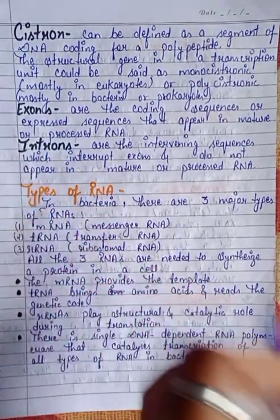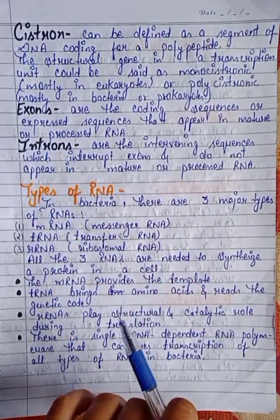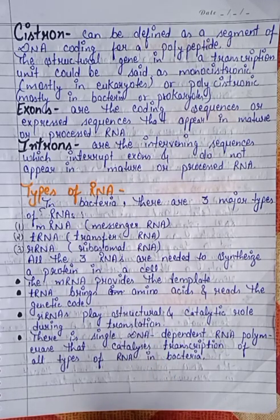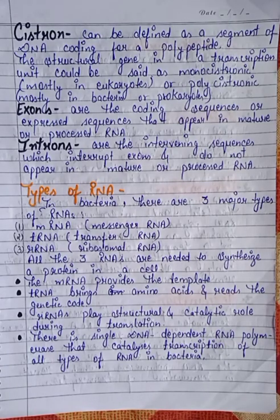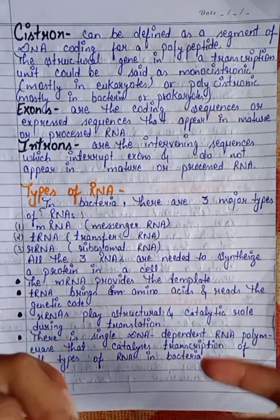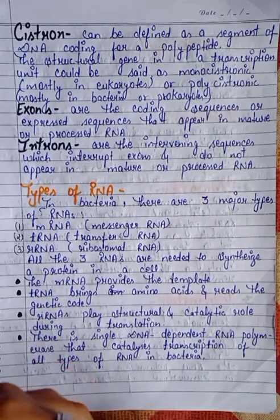Exons are the coding sequences, or expressed sequences, that appear in the mature and processed RNA. Introns are the intervening sequences which interrupt exons and do not appear in mature or processed RNA.